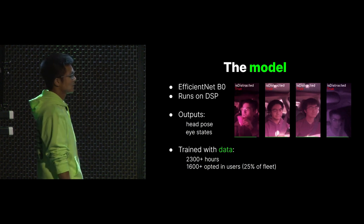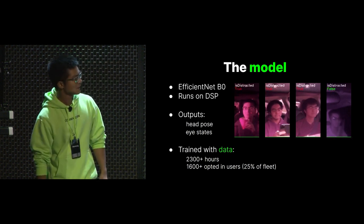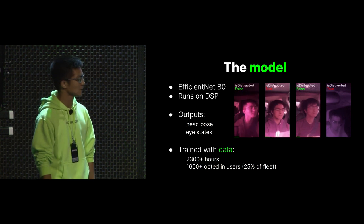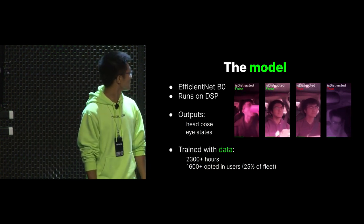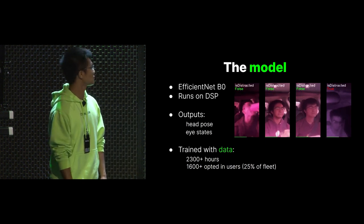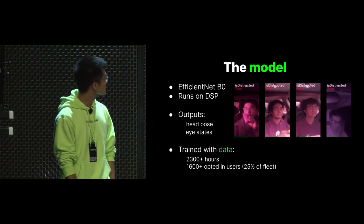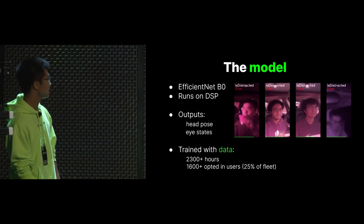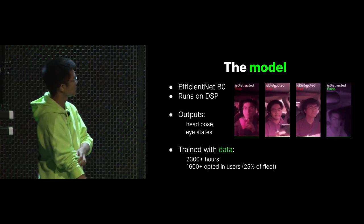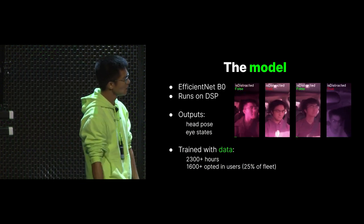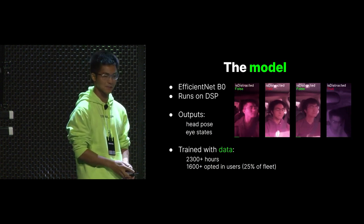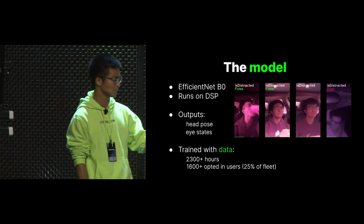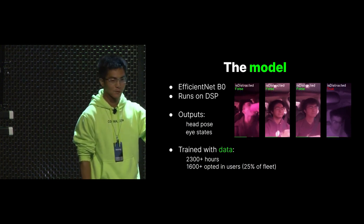You might wonder how the measly 8-bit model can do all these tricks. As George always says, the most important aspect of machine learning is of course the data. The latest DM model is trained with more than 23,000 hours of driver videos uploaded from over 1,600 unique users from our fleet, which makes up roughly 20-25% of the total user space. Thanks to them, OpenPilot DM can be as good as it is today. We would love to see this number grow, and in the coming slides I'm going to show what we are doing with the data and why more people should upload.